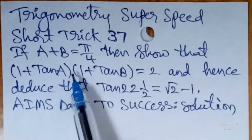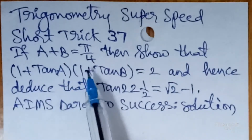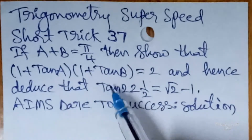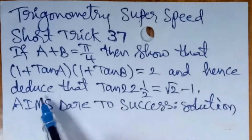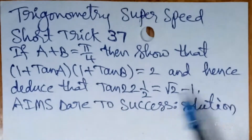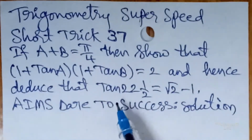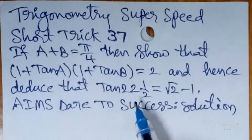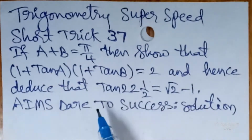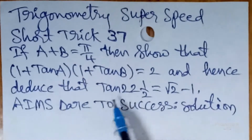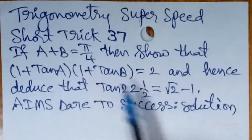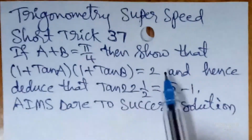The question is: if a plus b equals pi by 4 (which is 45 degrees), then show that (1 + tan a)(1 + tan b) equals 2. And hence deduce that the value of tan 22 and a half degrees equals root 2 minus 1. That means also prove that tan 22.5° is root 2 minus 1 by using this result.